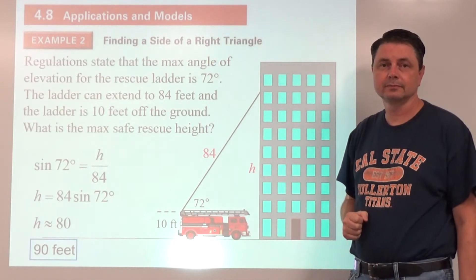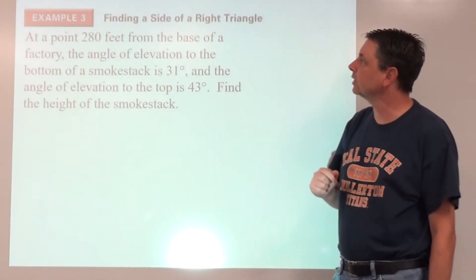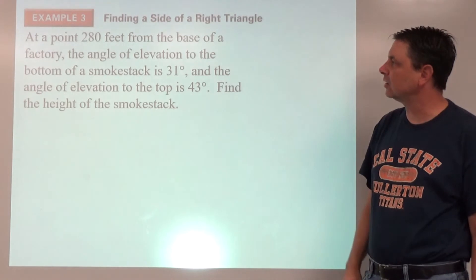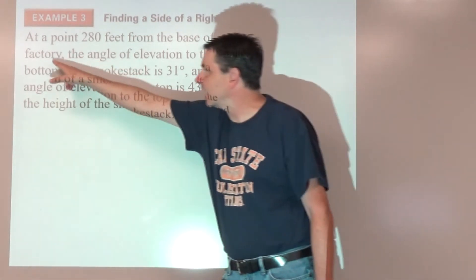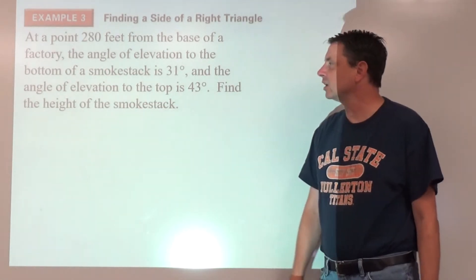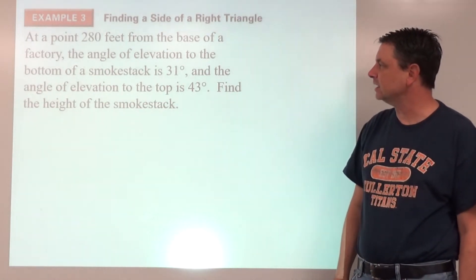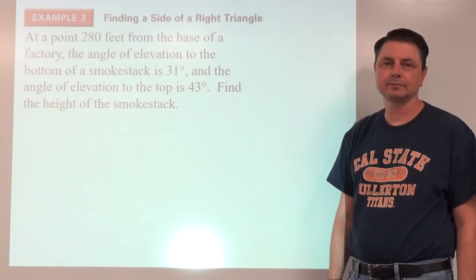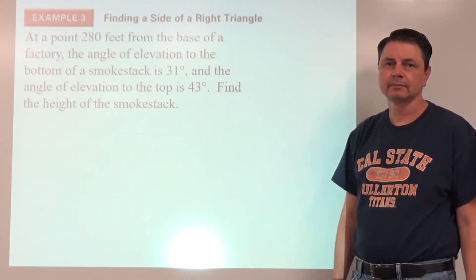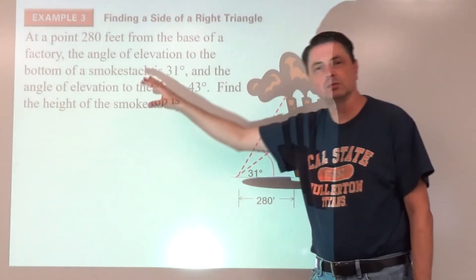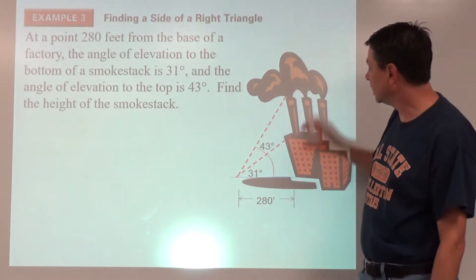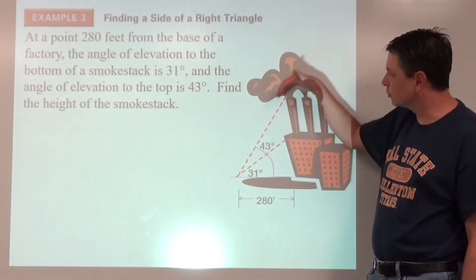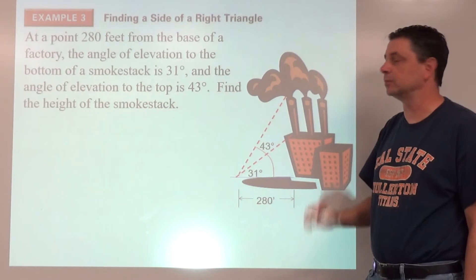Example three, find the side of a right triangle. At a point 280 feet from the base of a factory, the angle of elevation to the bottom of a smokestack is 31 degrees and the angle of elevation to the top of that smokestack is 43 degrees. Find the height of the smokestack. Pause here until you have a detailed sketch. Hopefully if you didn't know what the smokestack was, maybe you could Google it. It's for factories, especially where I grew up, where you had a pulp mill, smoke building out all the time and did not smell very good at all.